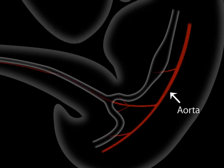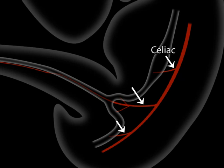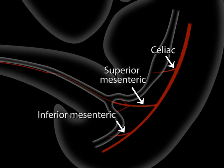Here's the aorta. Here are the three arteries that supply the GI tract: the celiac for the foregut, the inferior mesenteric for the hindgut, and the superior mesenteric for the midgut.